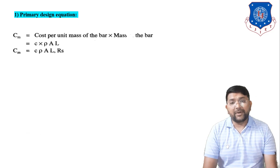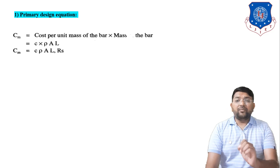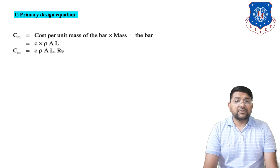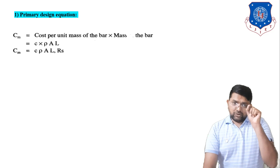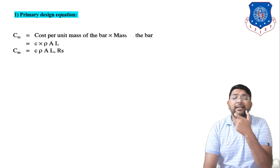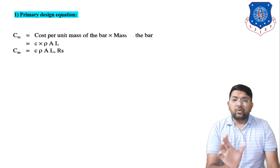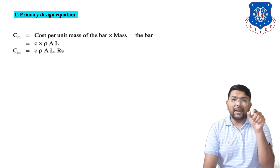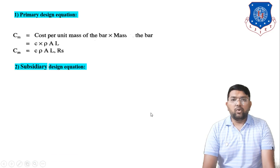First we define the primary design equation, then the subsidiary design equation, then the limit equation, and then correlate all equations. The primary design equation is: Cm equals cost per unit mass into mass of the bar. Since density equals mass divided by volume, mass equals density into volume. The volume of the bar is cross-sectional area into length, so mass equals ρAL. Therefore Cm equals c·ρ·A·L in rupees.